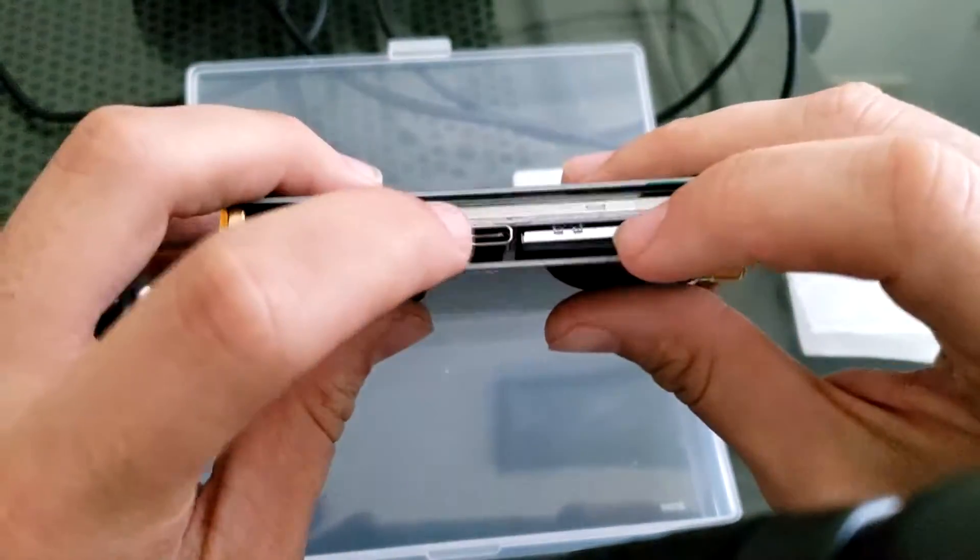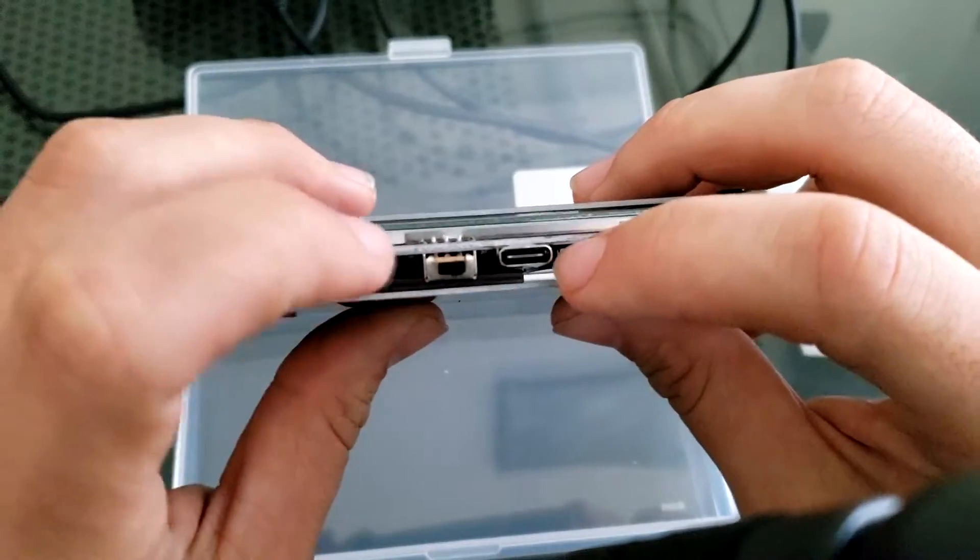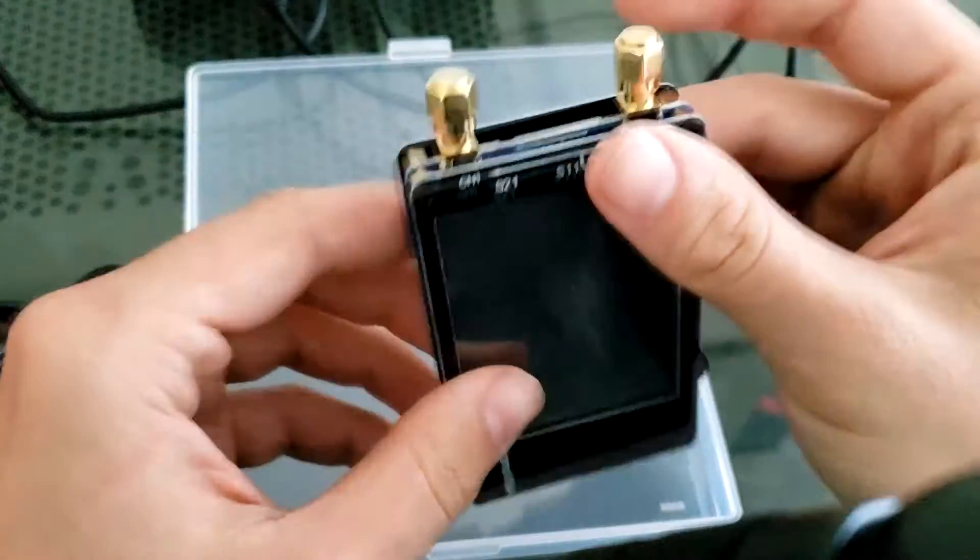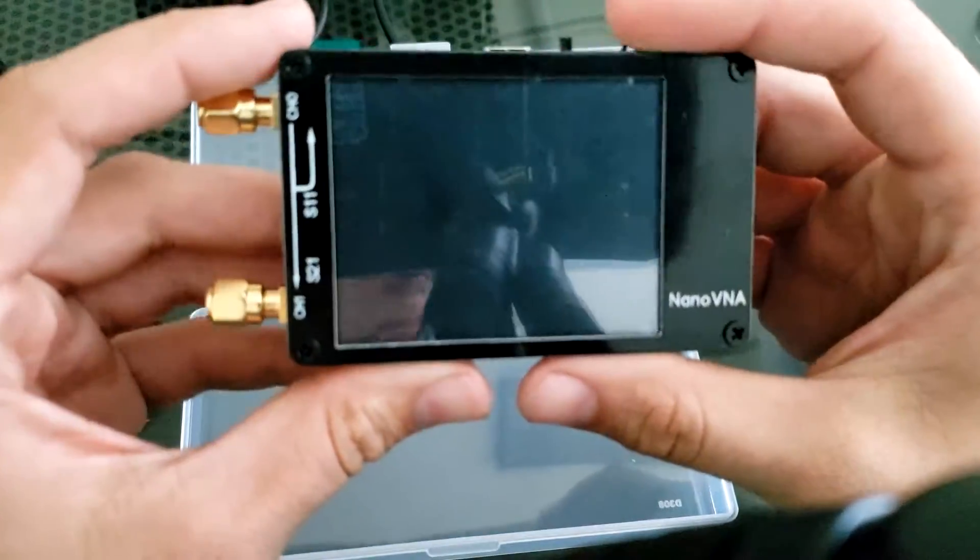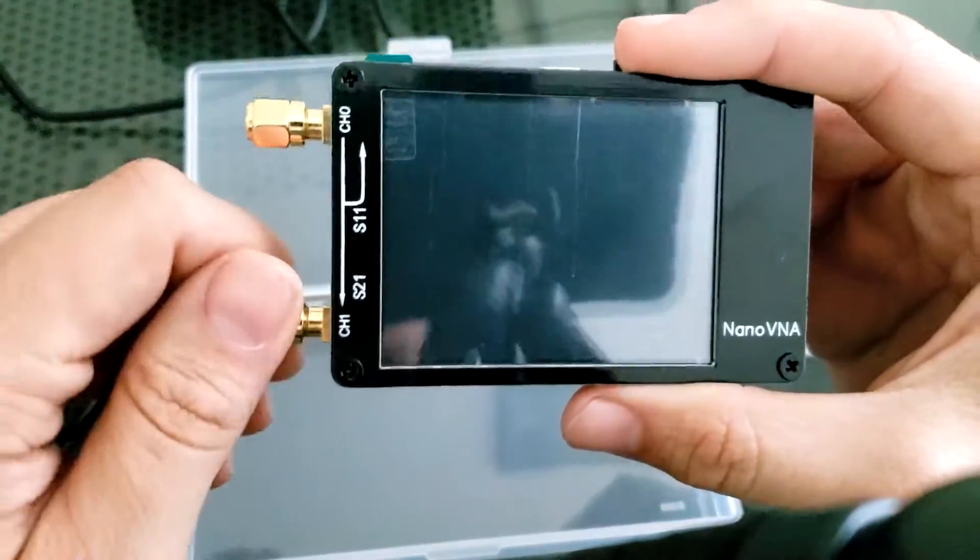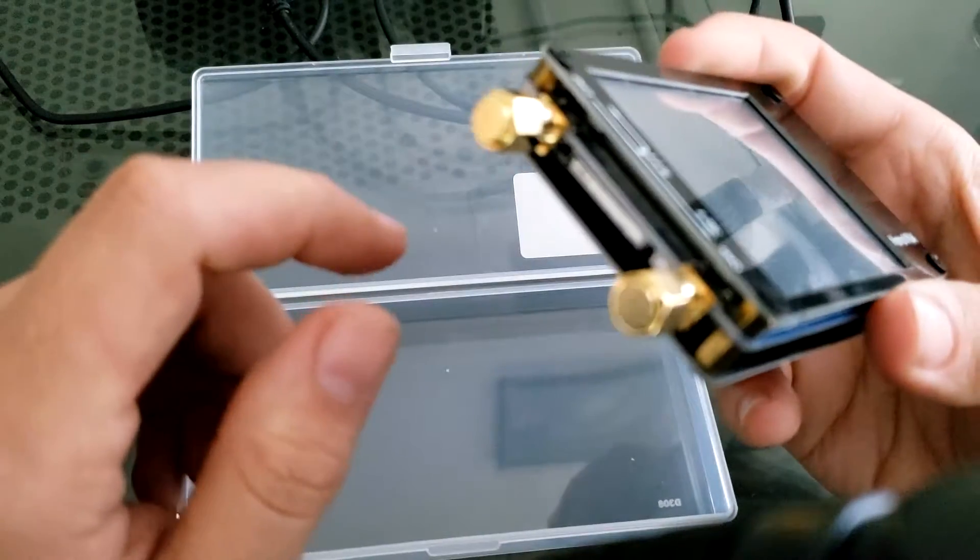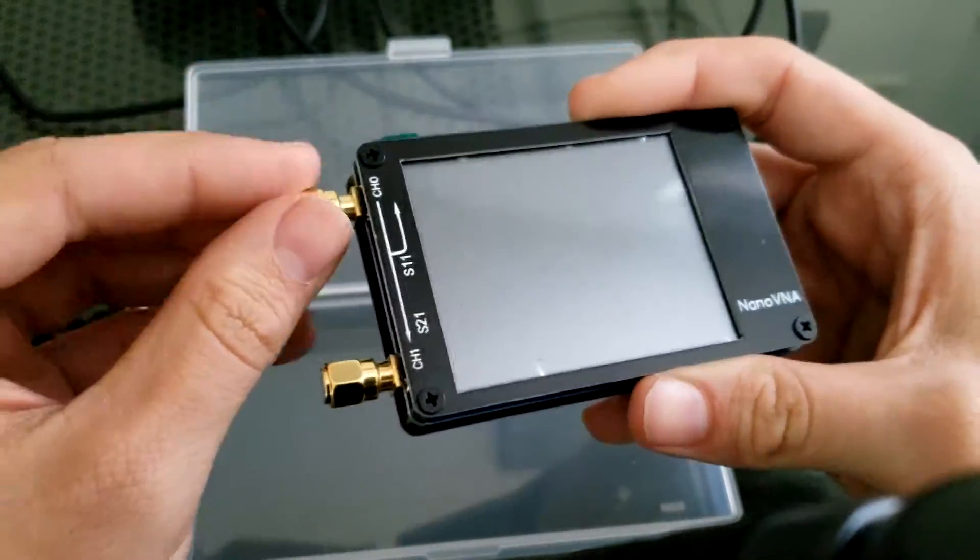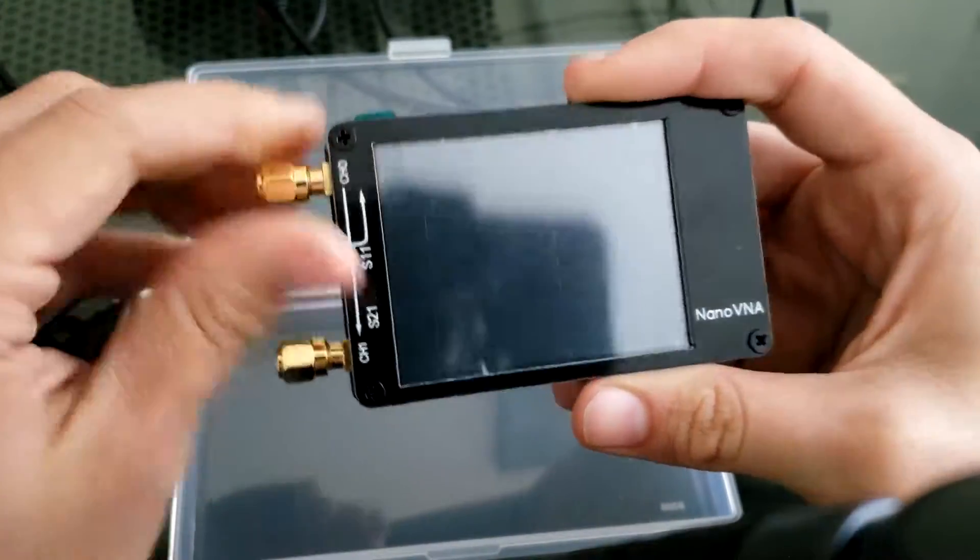This would be more than likely the charging port or the USB control port. This right here looks like the front of the device. Right here we have our SMA connectors. These right here, it looks like maybe those are just to keep the ports safe.